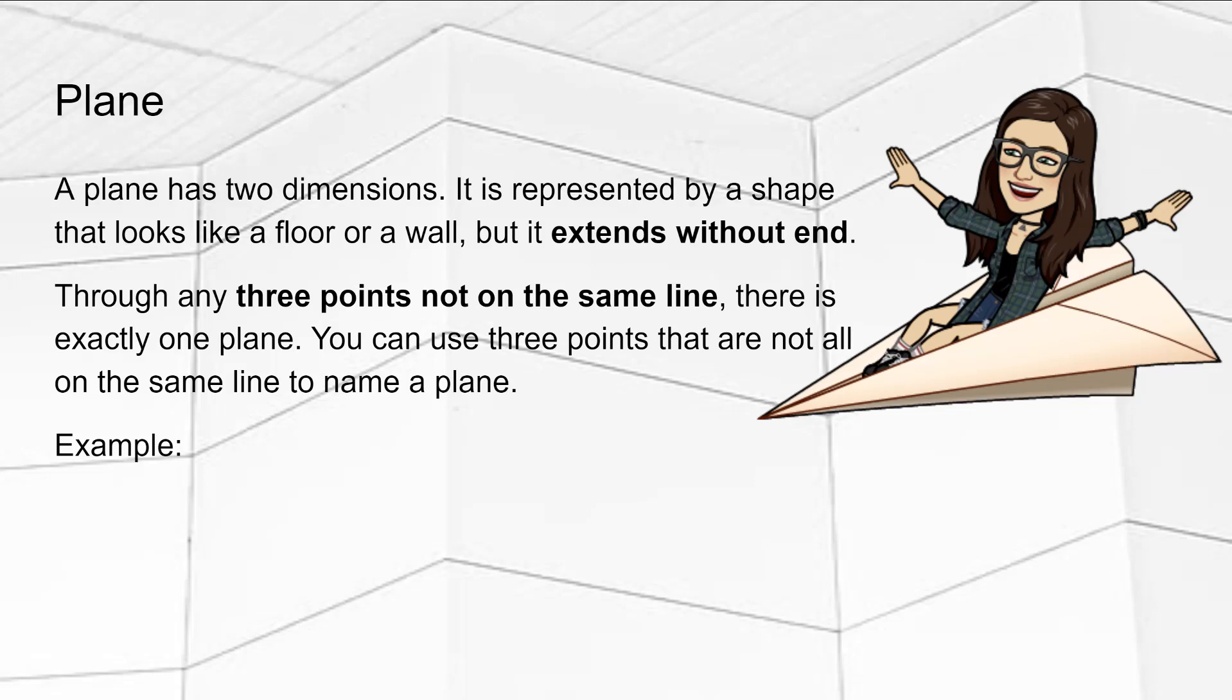A plane has two dimensions. It is represented by a shape that looks like a floor or a wall, but it extends without end. And through any three points not on the same line, there is exactly one plane. You can use three points that are not all on the same line to name a plane.